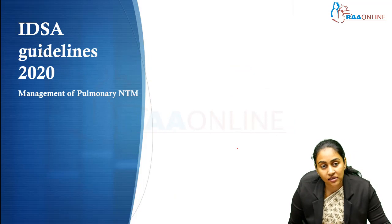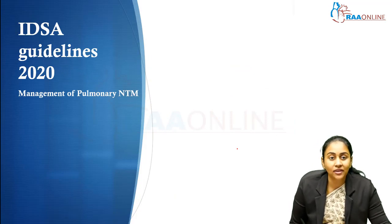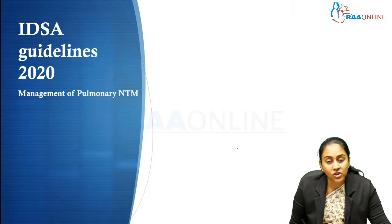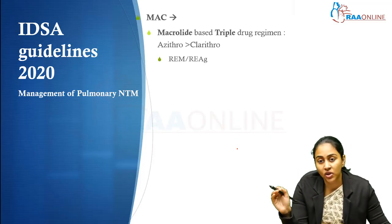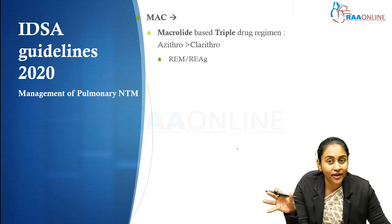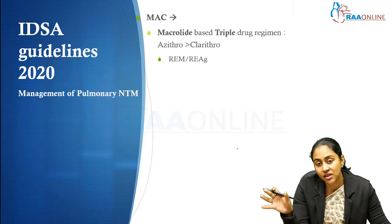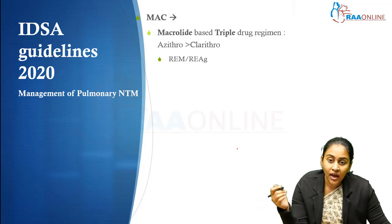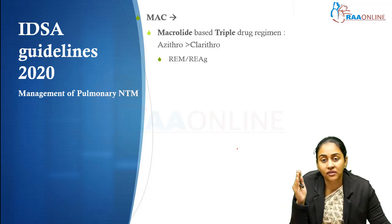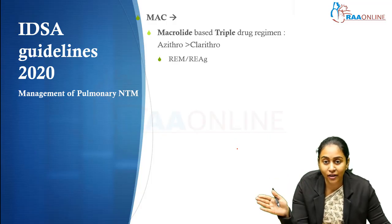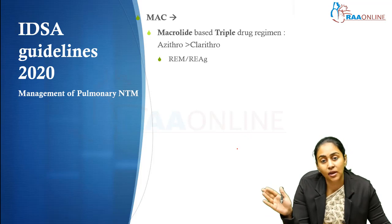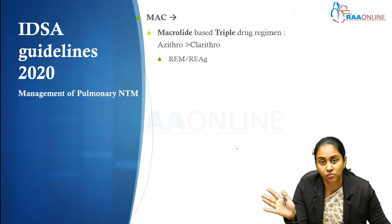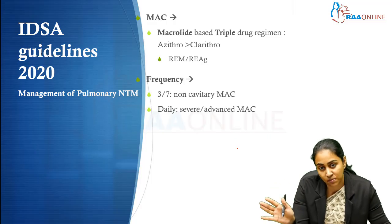What do the recent IDSA guidelines say? In 2020, the Infectious Disease Society of America came up with guidelines for managing patients with primary non-tuberculous mycobacterial infections. A macrolide-based triple drug regimen is what is advocated. IDSA says azithromycin is preferred to clarithromycin because of fewer drug interactions. Therefore, the regimen could be rifampicin, ethambutol, and macrolide; or you can also use rifampicin, ethambutol, and aminoglycoside where macrolide cannot be used.